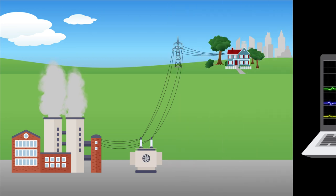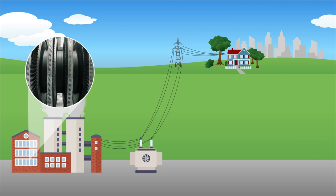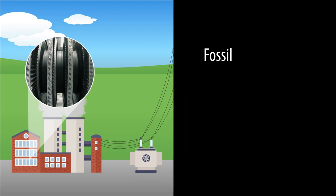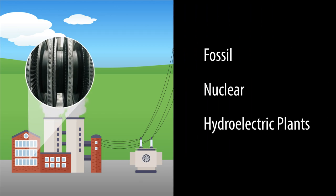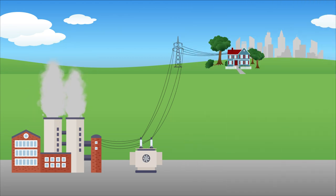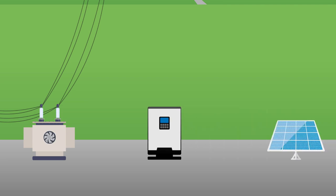In today's power system, fault current is mostly produced by synchronous generators in fossil, nuclear, and hydroelectric plants, which inherently have the ability to produce large amounts of current. But what happens if we replace those synchronous generators with inverter-based resources, like solar PV and wind?